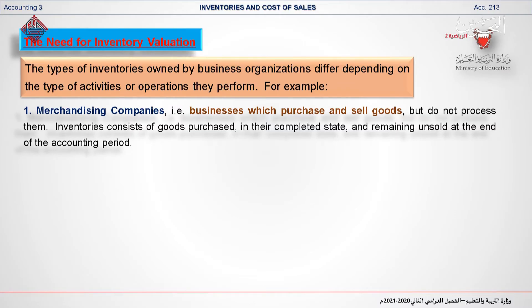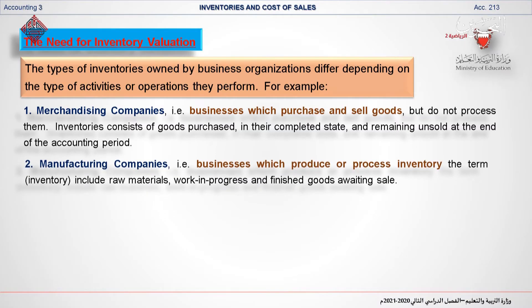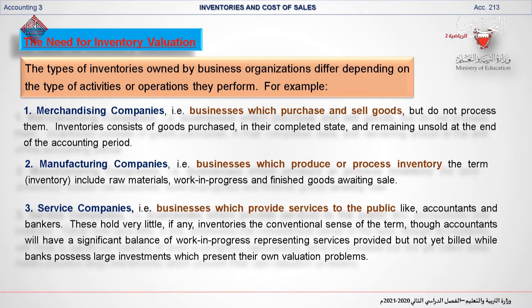In the case of a merchandising company, the term inventory consists of goods purchased in their completed state. The second type of companies are manufacturing companies. A manufacturing business is any business that uses raw materials, parts, and components to assemble finished goods by employing machines, robots, computers, etc. One example is cars manufacturing companies such as Ford. In this case, the term inventory includes raw materials, work in progress, and finished goods awaiting sale.